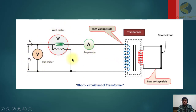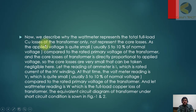We gradually increase the voltage and check the current on the ammeter. When the current reaches the rated current of the HV side of the transformer, we stop and take the reading. This reading will be the sum of copper losses in the HV side plus copper losses in the LV side. Now we describe why the wattmeter represents only the total full load copper losses of the transformer and not the core losses — this is an important question.